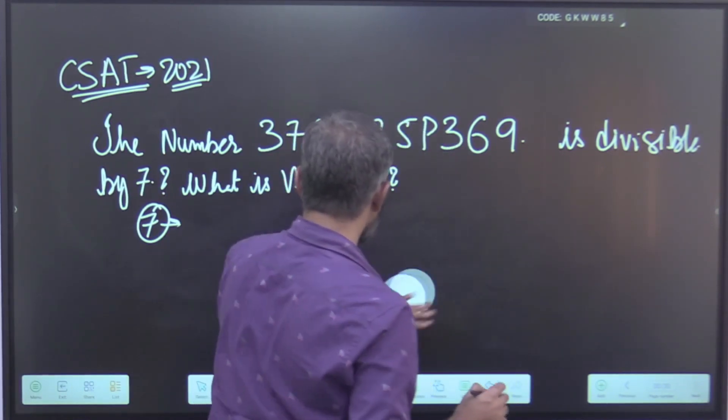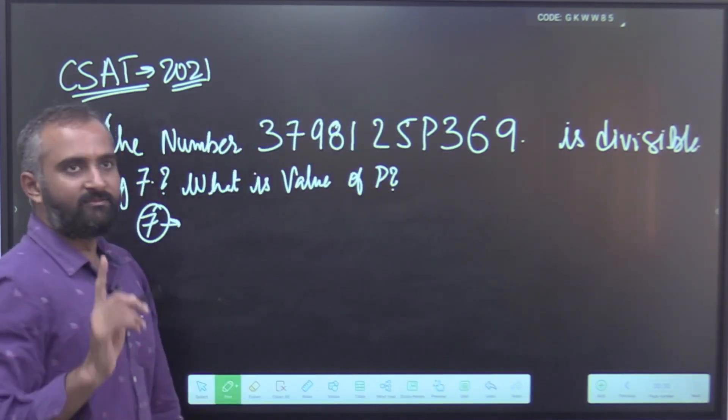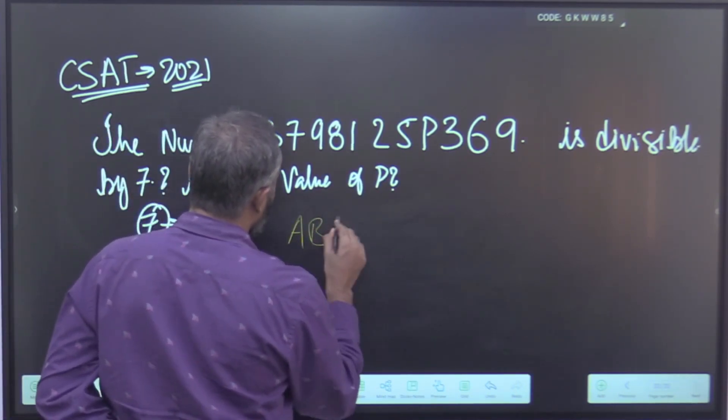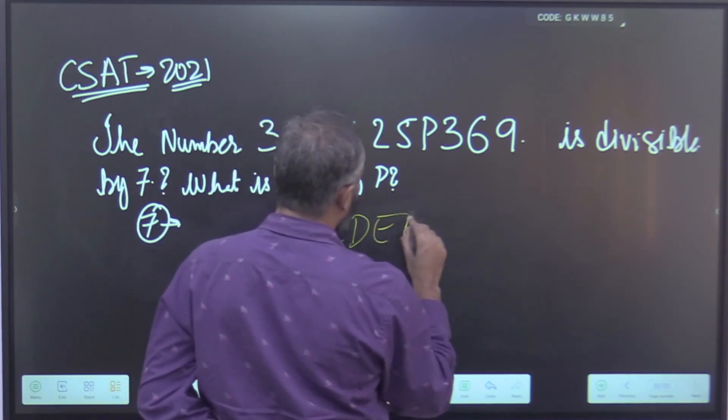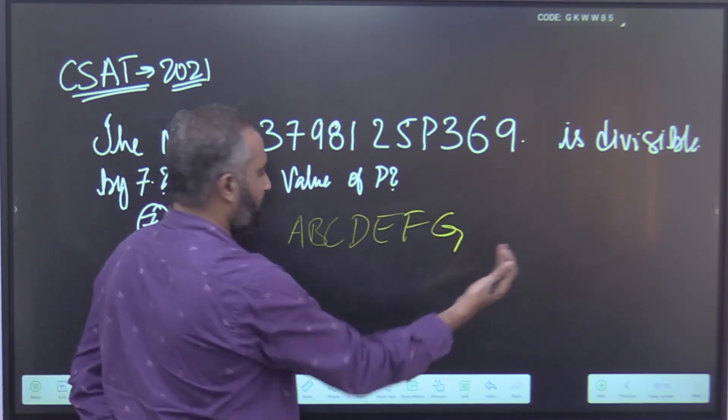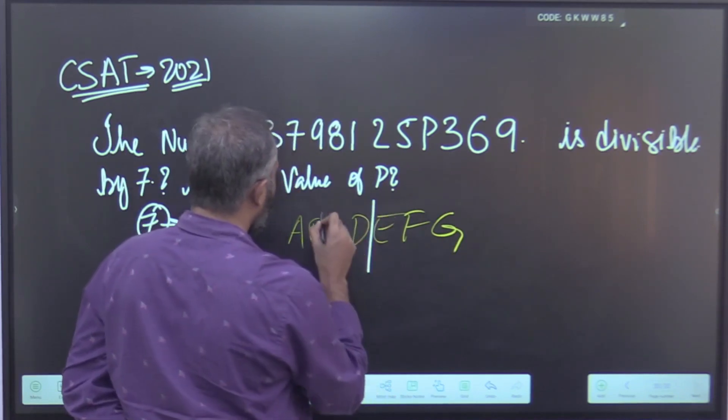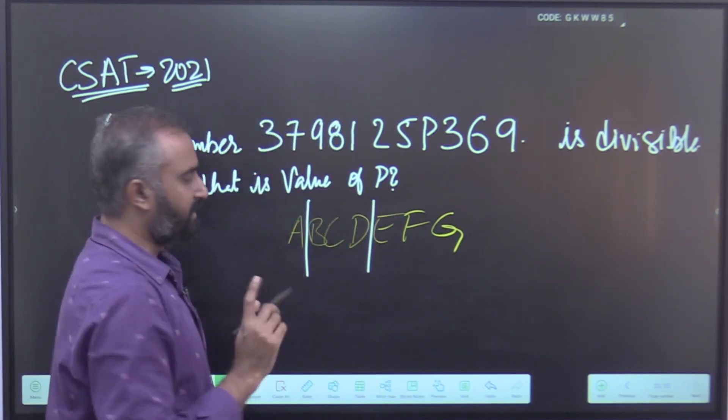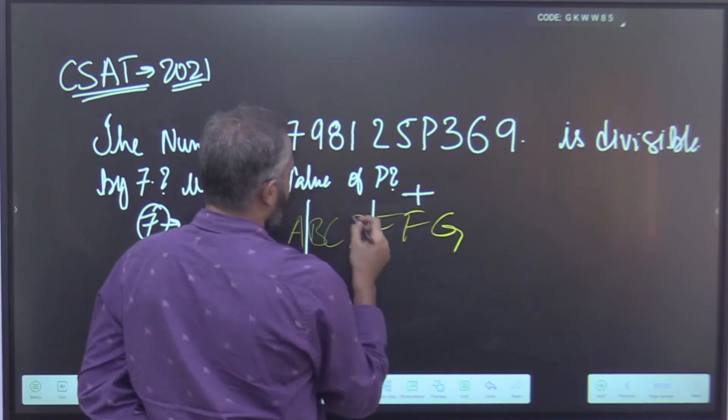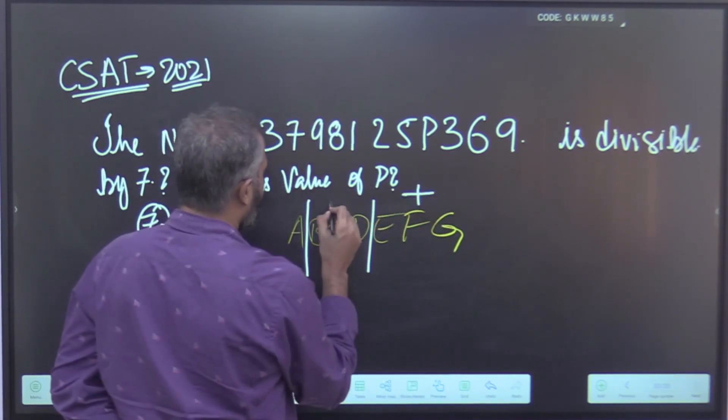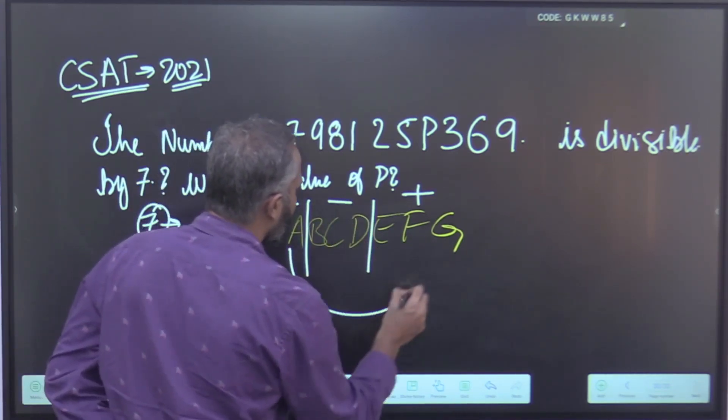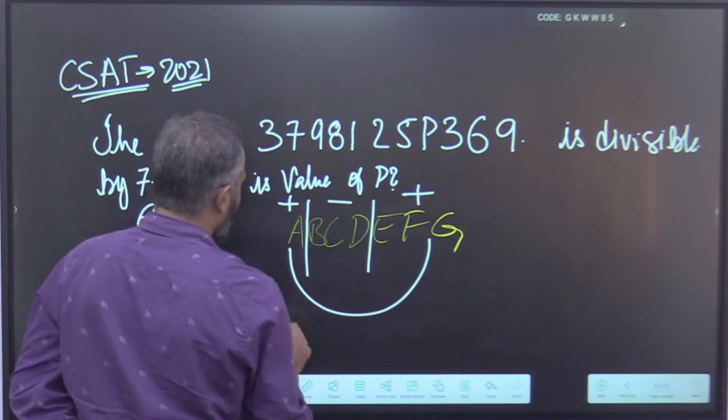Now, the divisibility rule of 7 is: suppose you take a number a, b, c, d, e, f, g. You start from the right and divide the number into blocks of 3, and then assign alternate symbols starting with positive at the first end, this is negative, this is positive. Now, then add both positive ends and subtract.